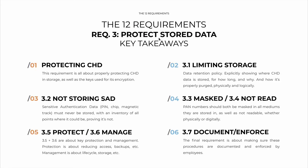What are our key takeaways? The first is about protecting cardholder data — protect data in storage as well as the keys used for its encryption. Sub-requirement 3.1 is about limiting storage: data retention policies explicitly show where cardholder data are stored, for how long, and why, and show that it's properly purged physically or digitally. Don't store the data that you don't need. 3.2 is very simple: don't store sensitive authentication data — PIN, chip, magnetic track are all off the table. You also have to show every single point where you could store it and show that you don't store it.